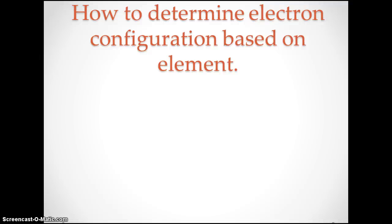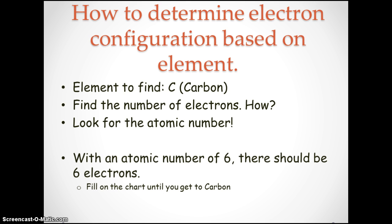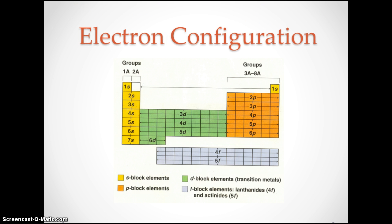How to determine electron configuration based on an element. We're going to use the element carbon. First, we need to figure out how many electrons carbon has. How do we find the number of electrons? That's right, look for the atomic number, which for carbon is six. So there should be six electrons. So we go to this configuration chart. Carbon has six electrons, we need to move six spaces.